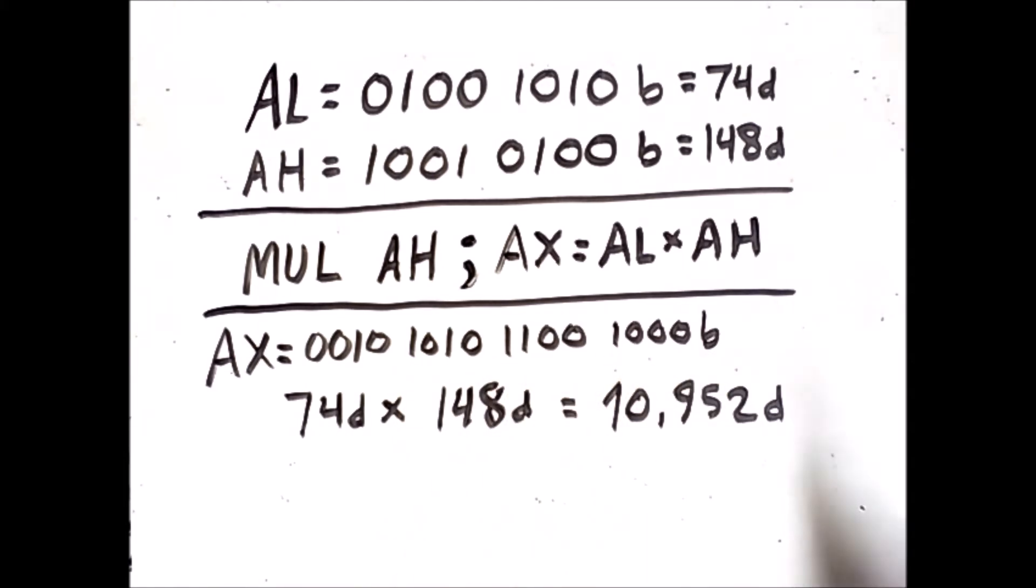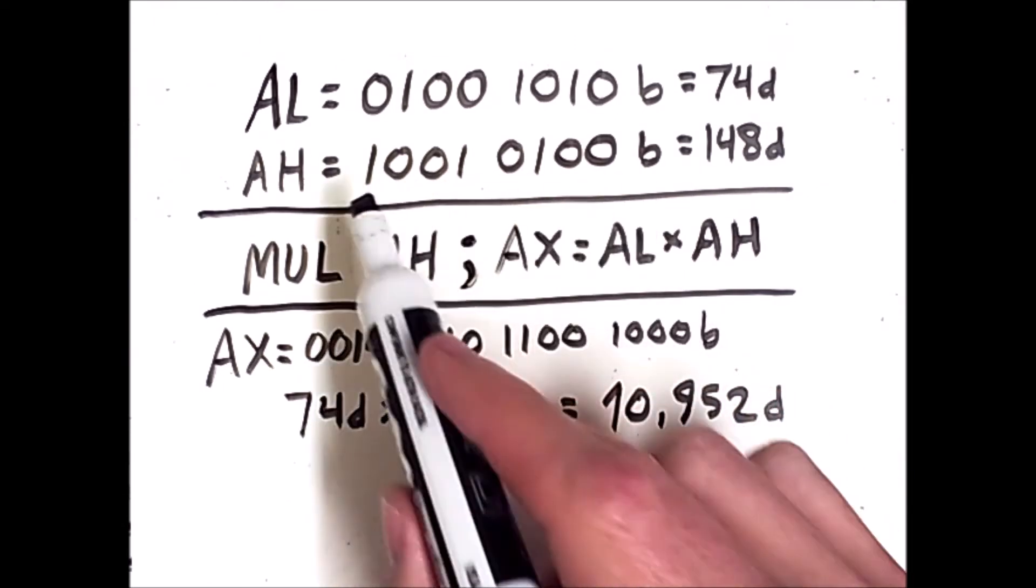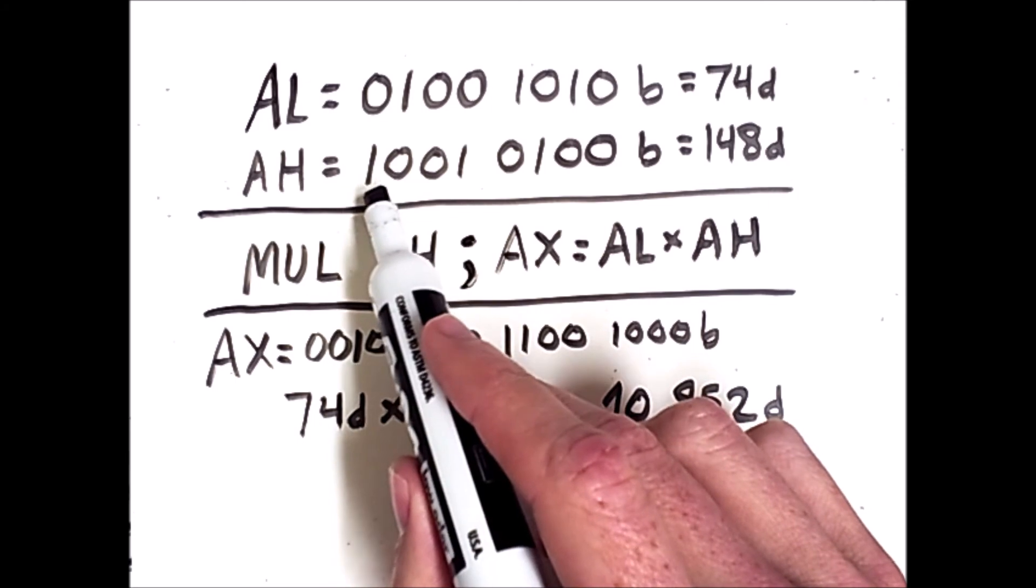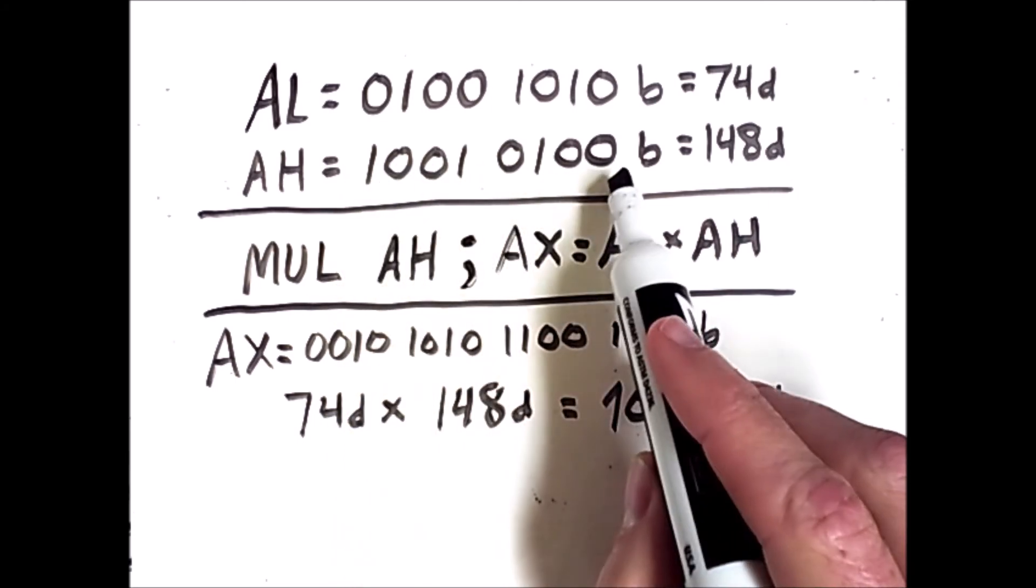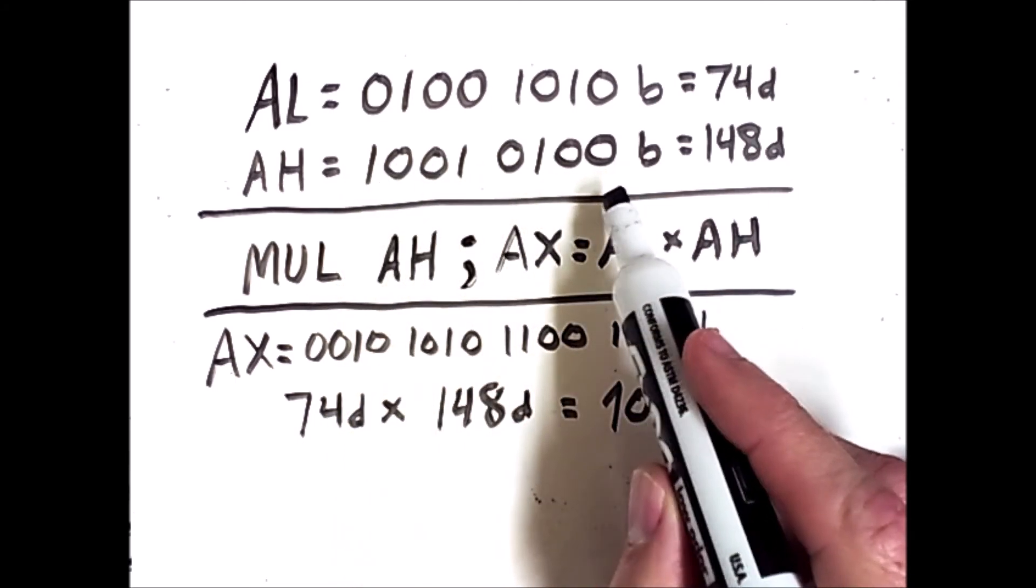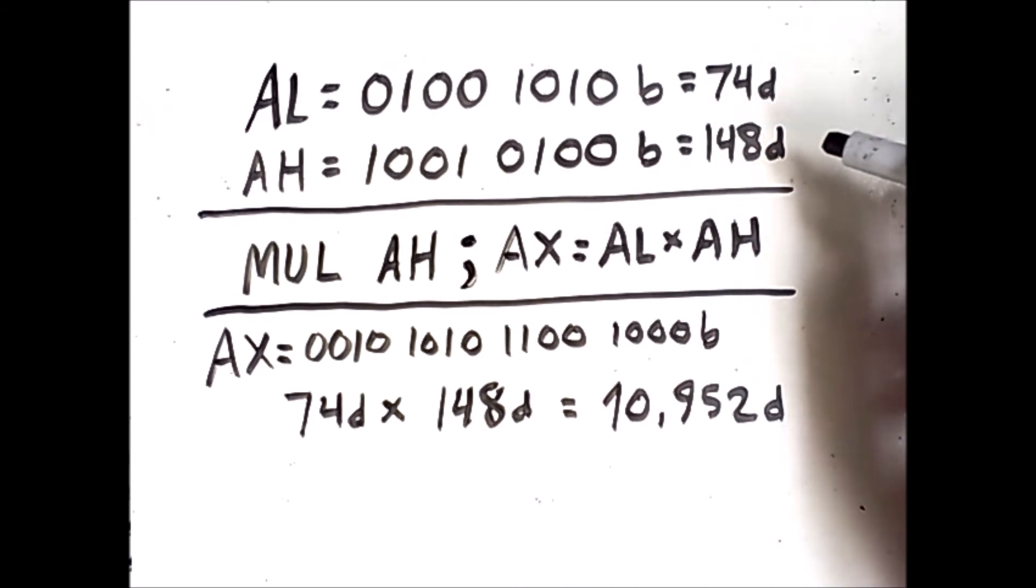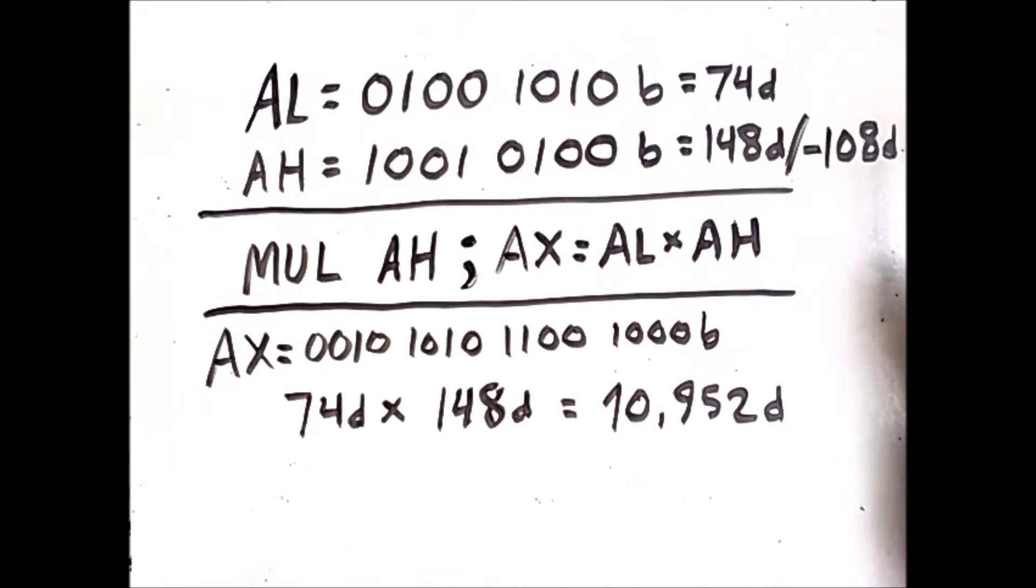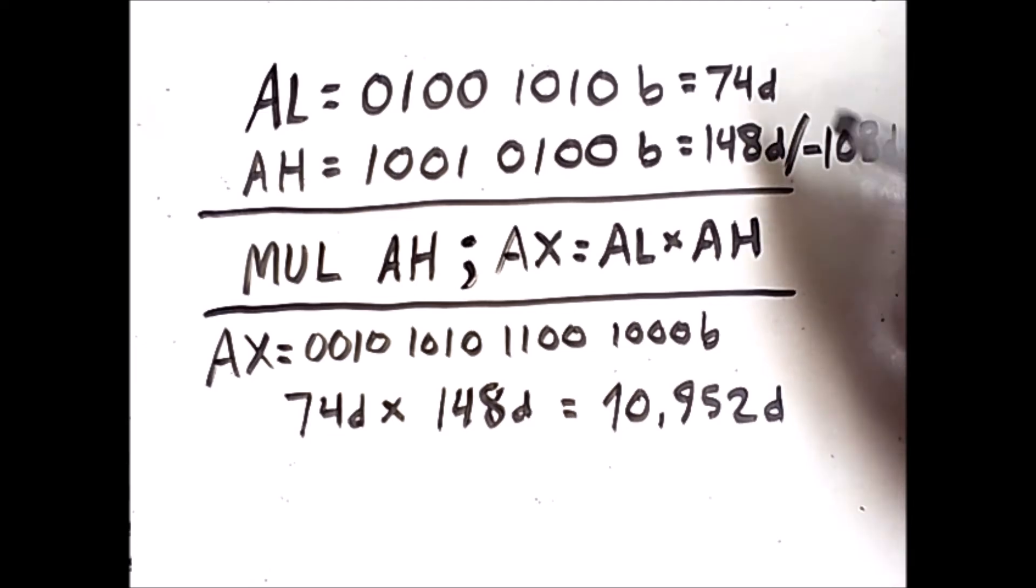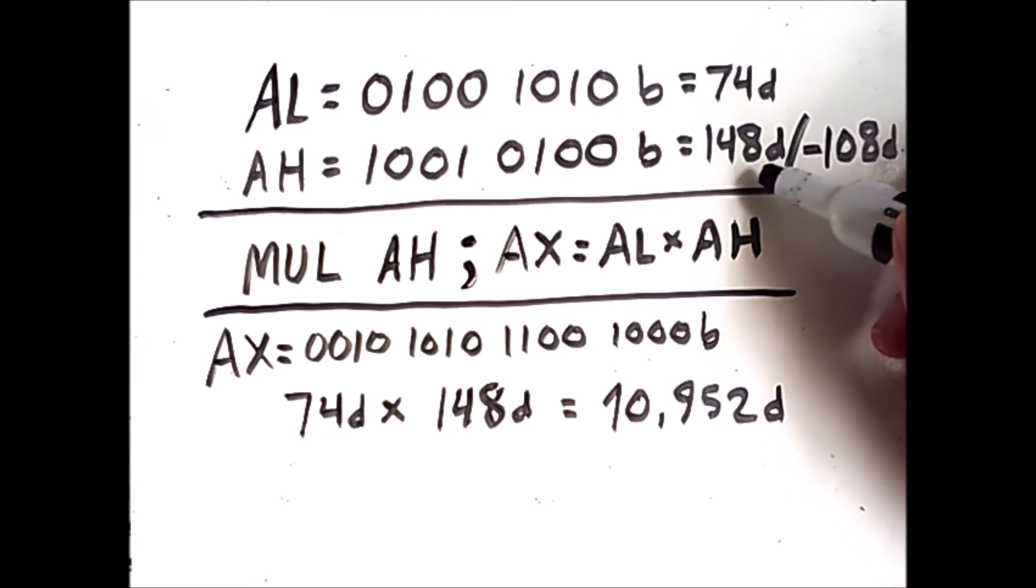However, I pointed out before that for 8-bit numbers, this 1 here could mean that this result is interpreted as a negative number. In that case, we would not have 148 here. Instead, we would have negative 108 here. So how do we know to multiply 74 by 148 instead of negative 108?